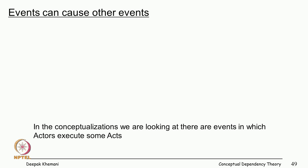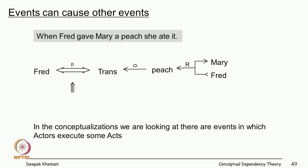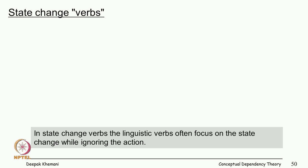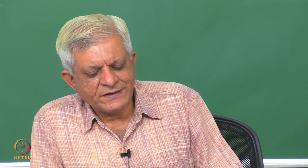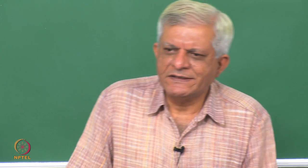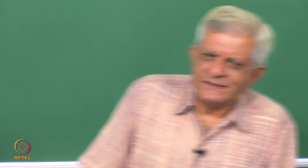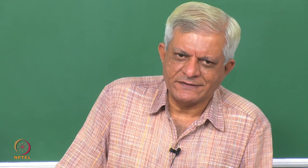Events can cause other events. 'Fred gave Mary a peach, she ate it' — Fred transferred the peach from Fred to Mary, as a result of which Mary ingested the peach. Certain words in English treated as verbs do not necessarily correspond conceptually to what we would call actions.